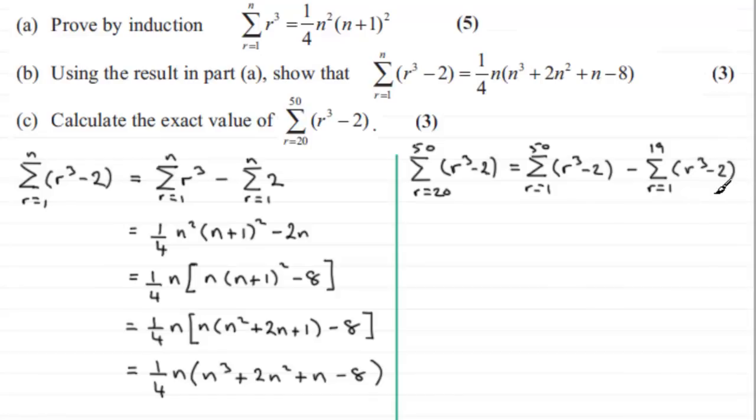which has got to be when n equals 19 and that's going to be r cubed minus 2. Okay so what we can do now is just put in these values that we've got from part B here.